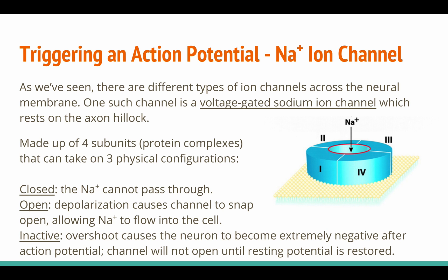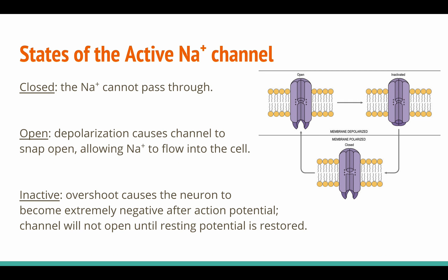When closed, the sodium ions cannot pass through. Depolarization causes the channel to snap open, allowing sodium ions to flow into the cell. In the inactive state, overshoot causes the neuron to become extremely negative after an action potential, and the channel will not open until the resting potential is restored. Here's a visual representation of what the three states of the sodium channel look like.